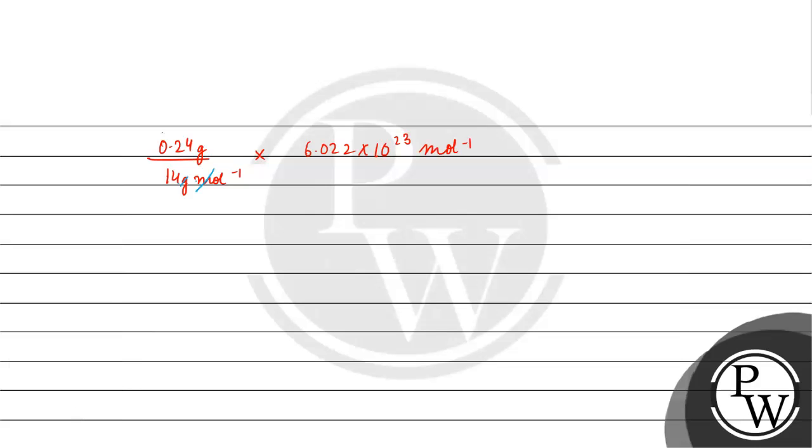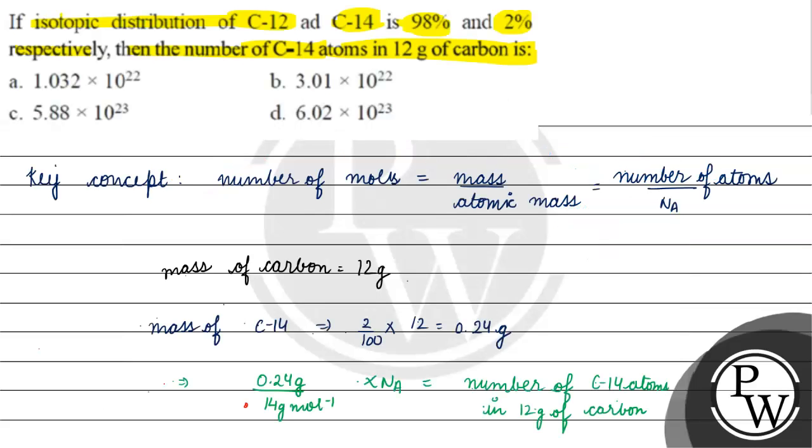That will come to 1.032 × 10^22 atoms of carbon present in 12 gram carbon. Coming back to the question.